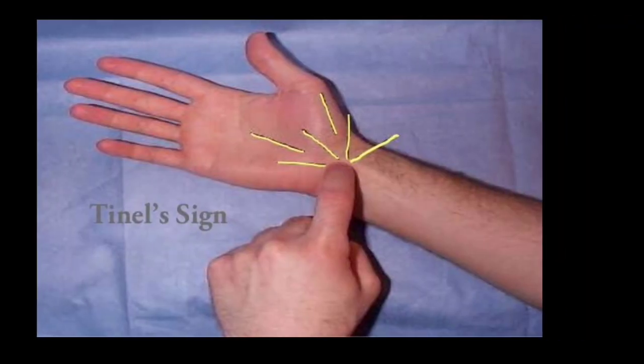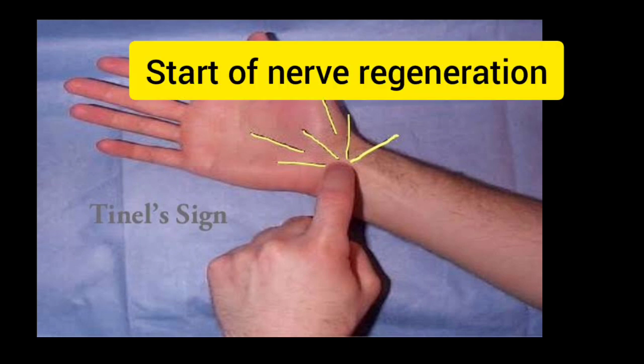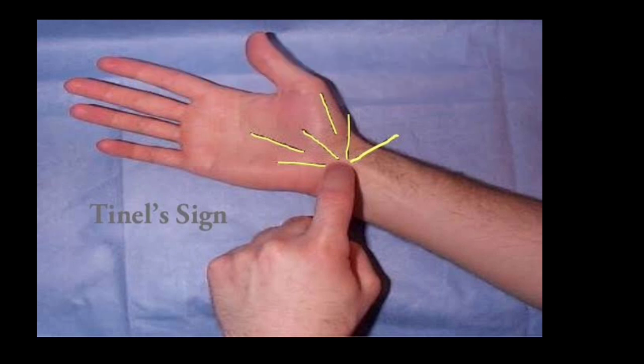Tinel's sign: it is used as an indicator of the start of nerve regeneration. It is elicited by percussion over the divided nerve, which results in a tingling sensation in the part supplied by the peripheral section.